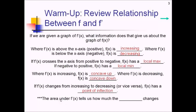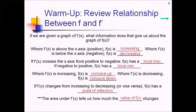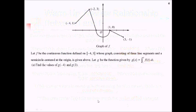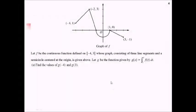And finally, the area under f prime tells us how much the original function value is changing — that is the change in whatever f is. Now that we've got that f, f prime relationship review under our belts, let's tackle a few examples.